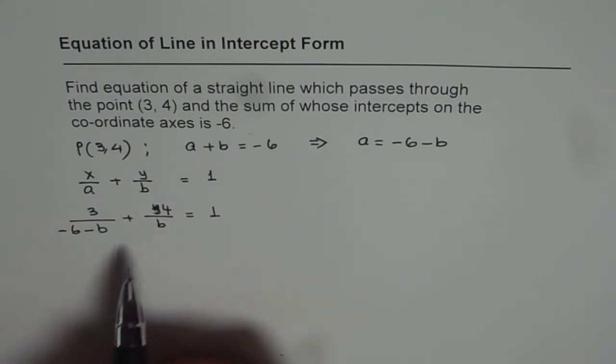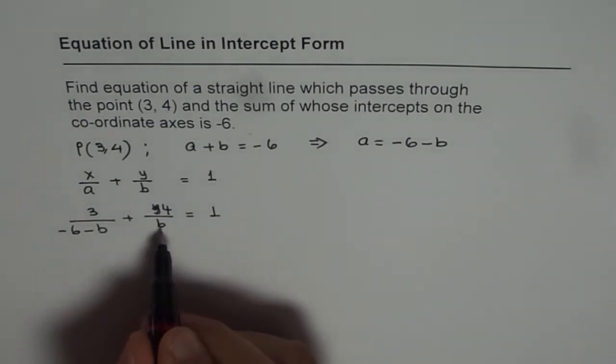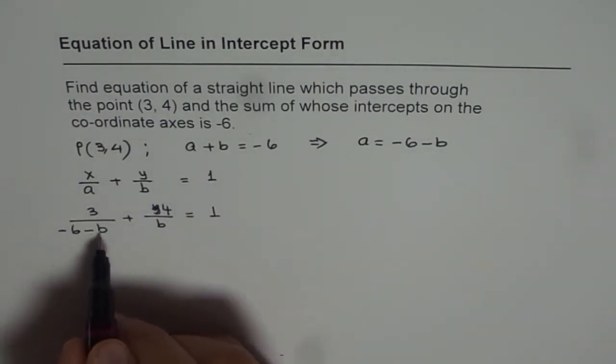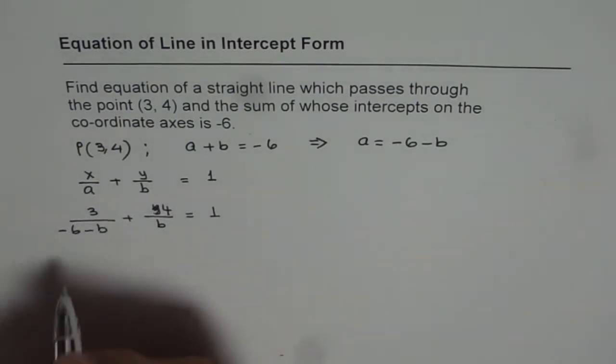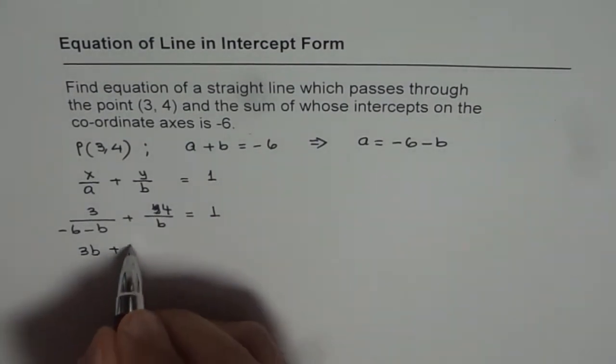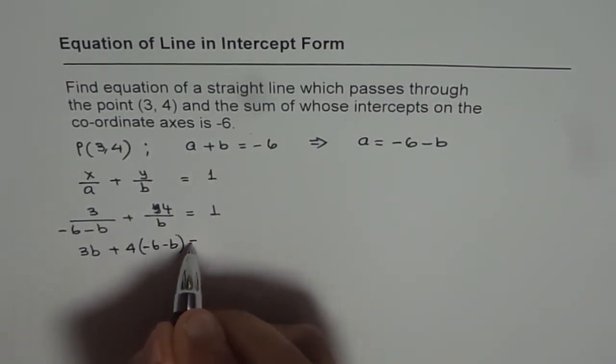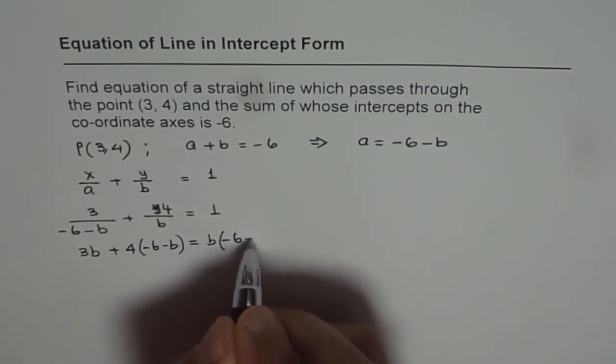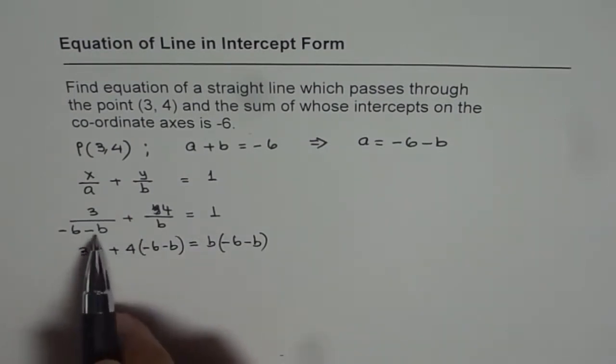We have only one unknown. What we will multiply? We can multiply both sides by b times (-6 - b). If we do that, what do we get? We get 3b in the first term plus 4 times (-6 - b) equals b times (-6 - b). We multiplied both sides by (-6 - b), avoiding fractions.